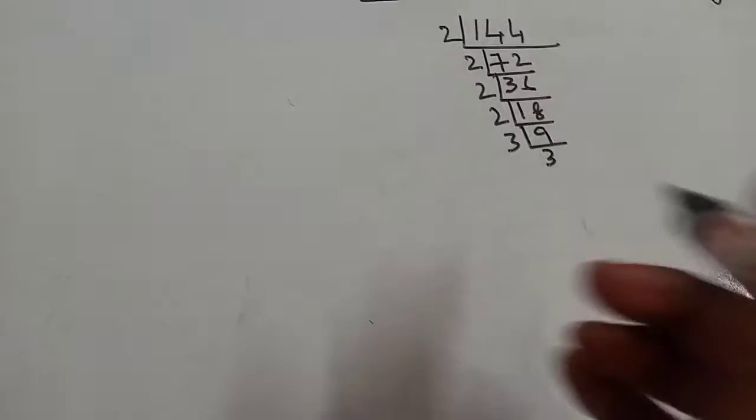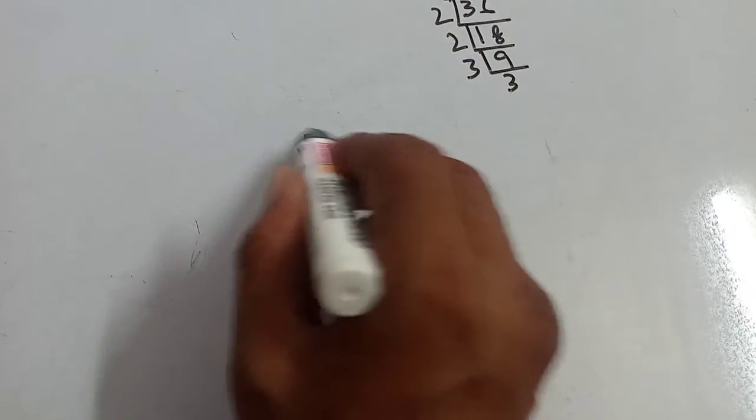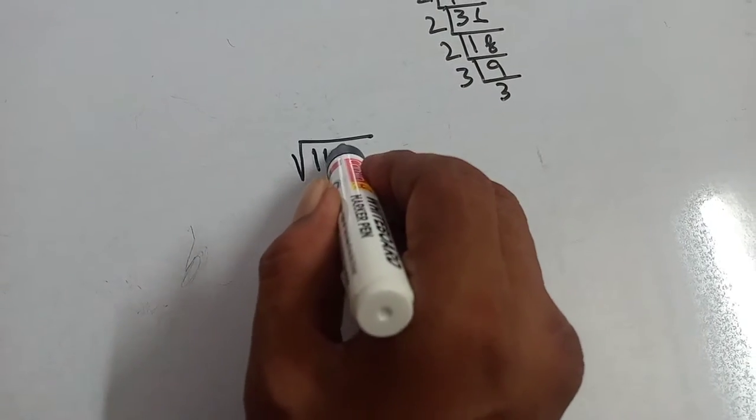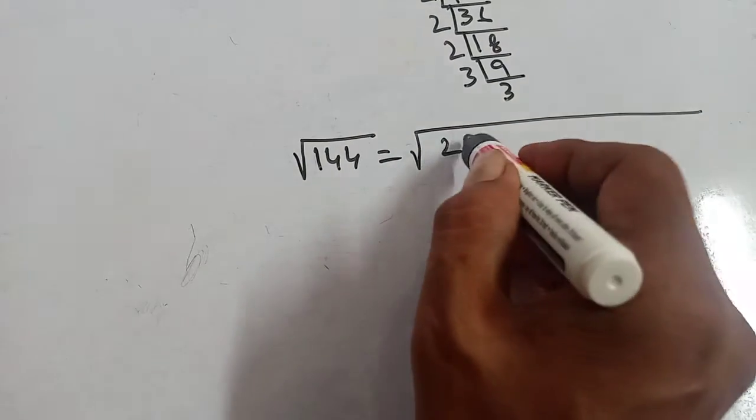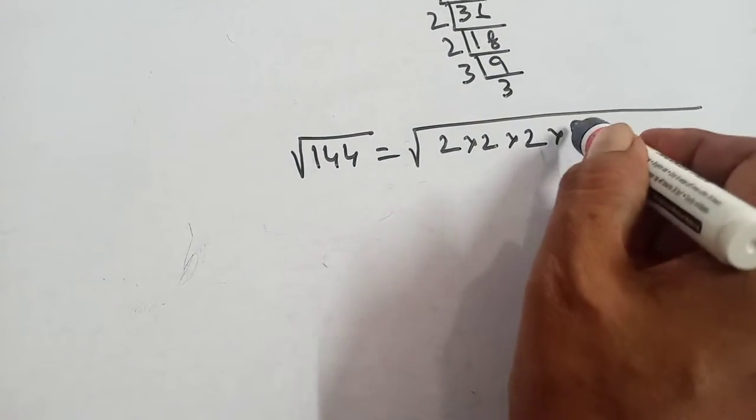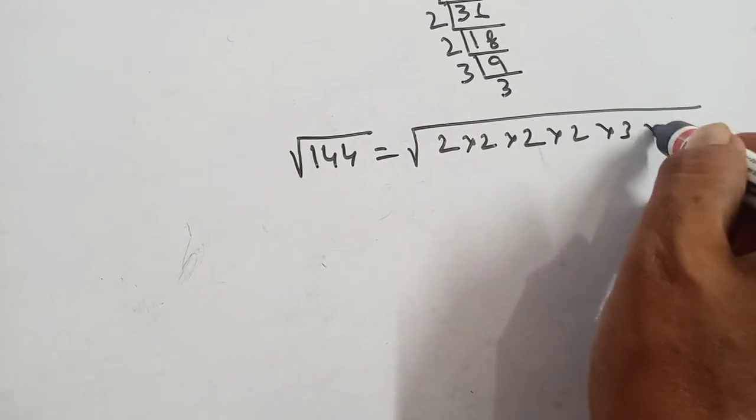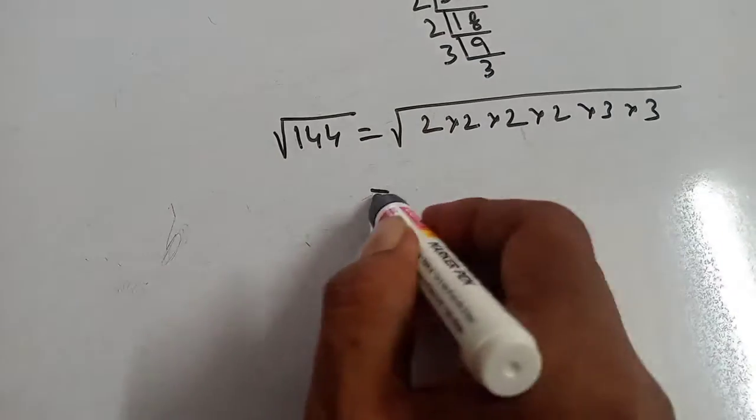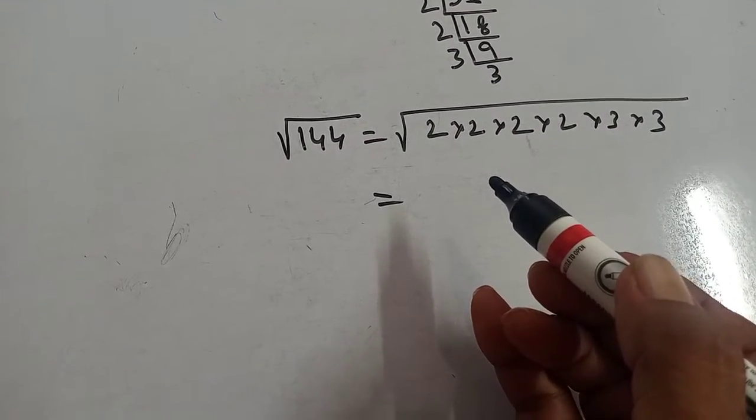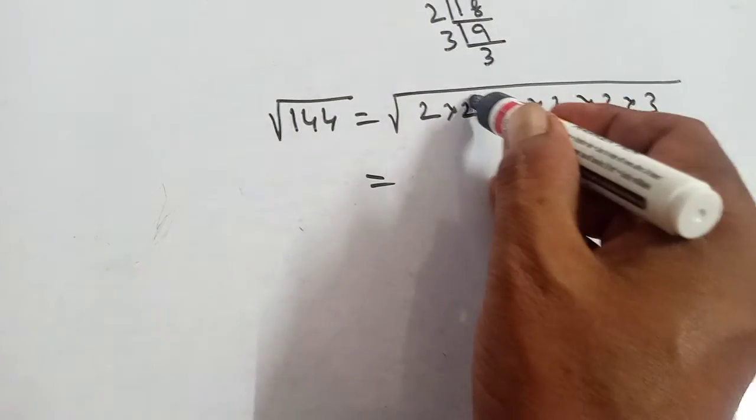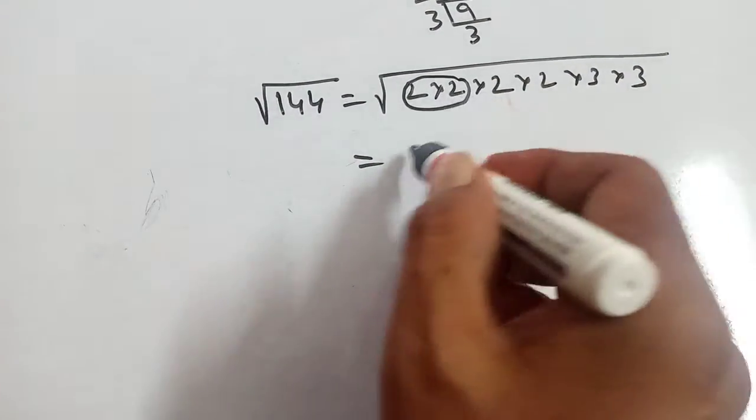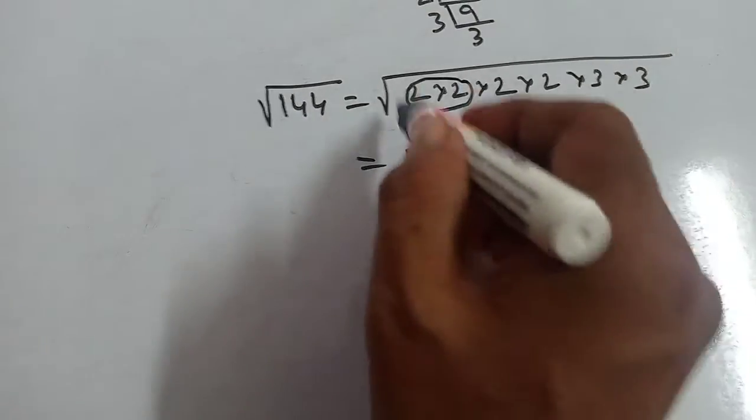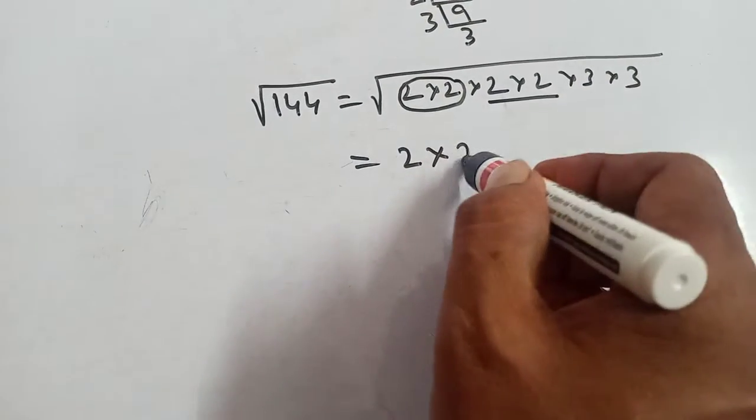Square root of 144 equals root over 2×2×2×2×3×3. Now make it square form. One 2 comes from the pair of this 2, then the square root will be removed.